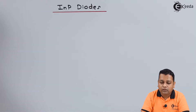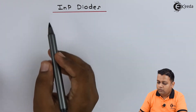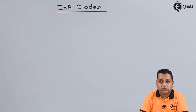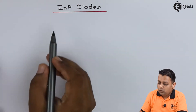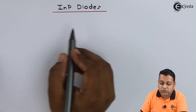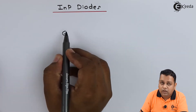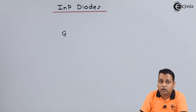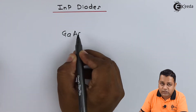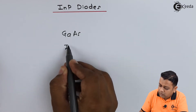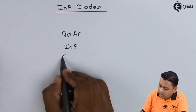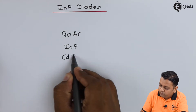So here we start with our topic. The topic is INP diodes — Indium Phosphide diode. The semiconductor compound structures we have already explained for use in transferred electron devices include Gallium Arsenide, and the current topic is Indium Phosphide and the Cadmium Phosphide diode.